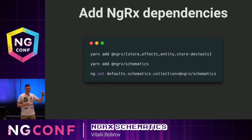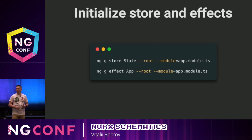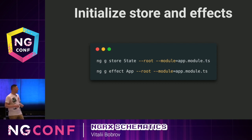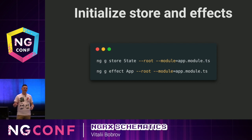Next, a really important thing: we're going to set up the NGRX collection as the default one in our Angular CLI config, so we don't have to specify the collection every time we use any schematic from this collection. So we're initializing our store using the NGRX generate store schematic, and we name our root state as 'state'. Then we're specifying the root argument and passing the name of the module where we're going to set up our root store.